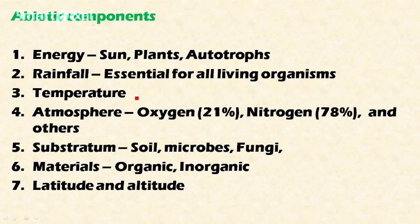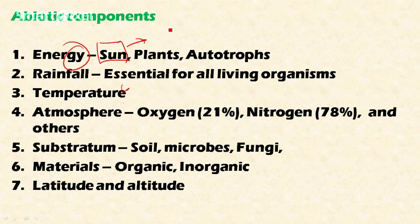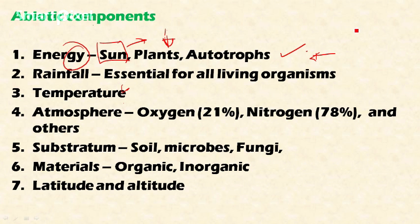The first abiotic factor is energy. Every organism on earth needs energy, and the sun is the primary source of all energy on the planet. With the help of the sun's energy, plants produce their own food through photosynthesis — these are called autotrophs. Some bacteria and blue-green algae also have the capacity to produce their own food using sunlight.